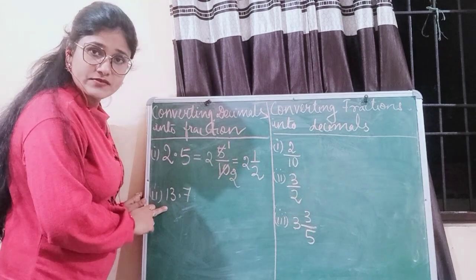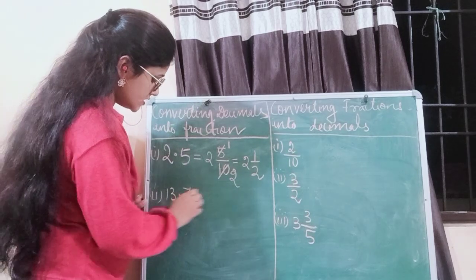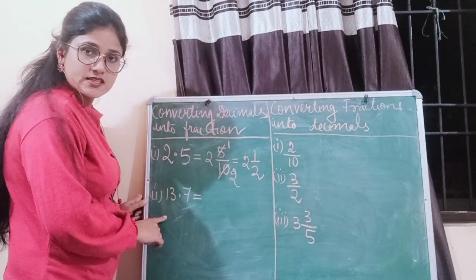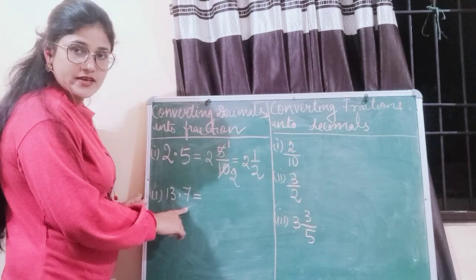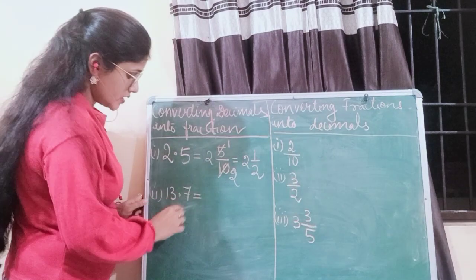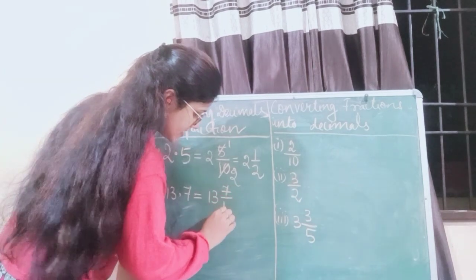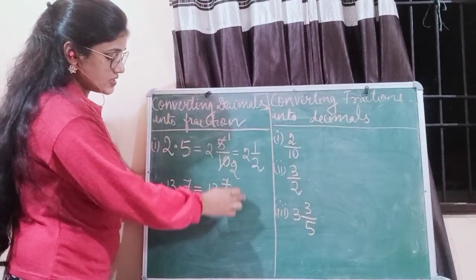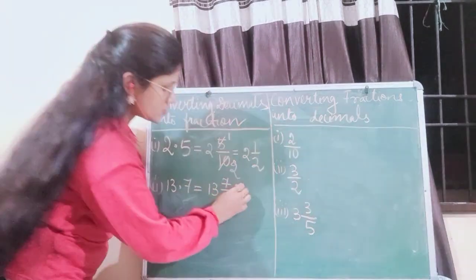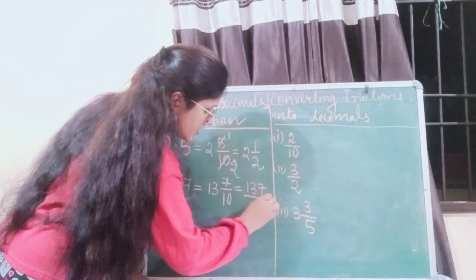The next number is 13.7. Once again, 13 here is the whole number part and 0.7, so 7 is in the decimals part and this is in the 10th place. So we can write it as 13 whole 7 by 10. And this is a mixed fraction. If you are going to change it into an improper fraction, you will write it as 137 by 10.